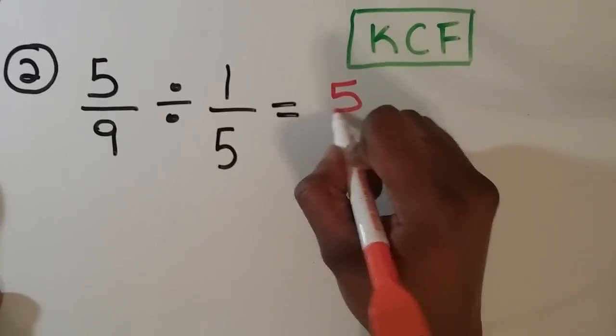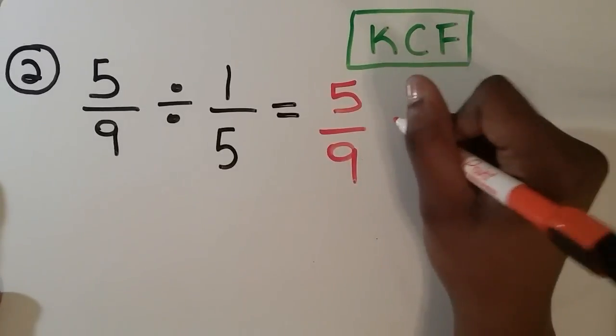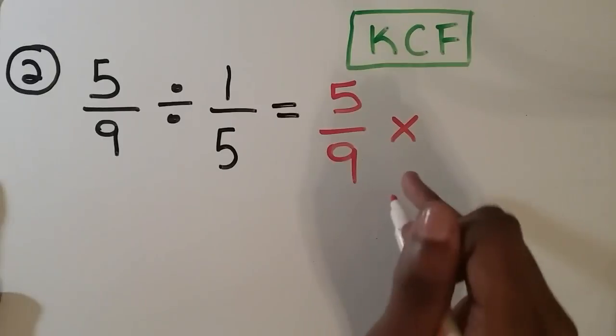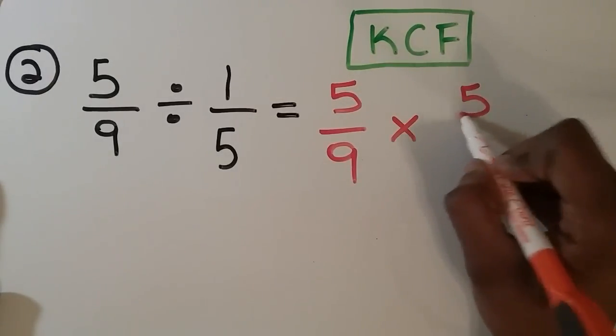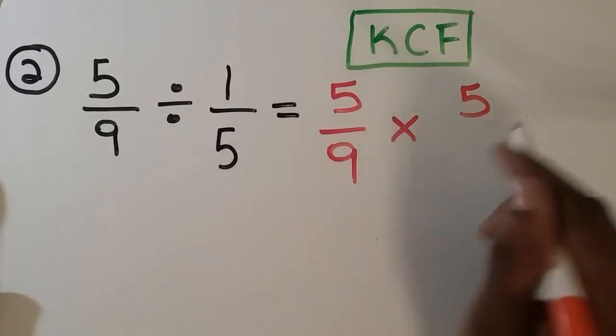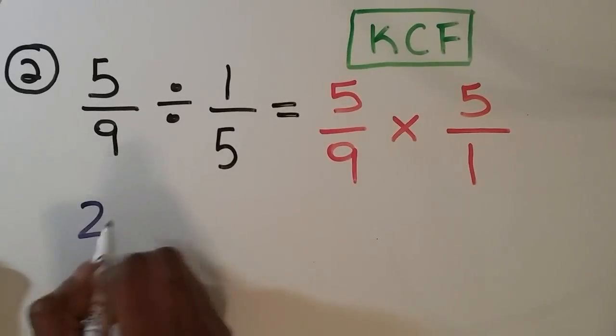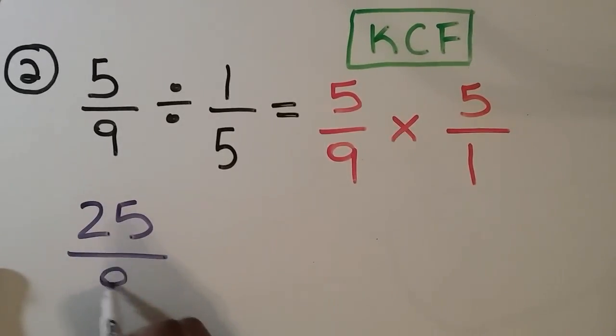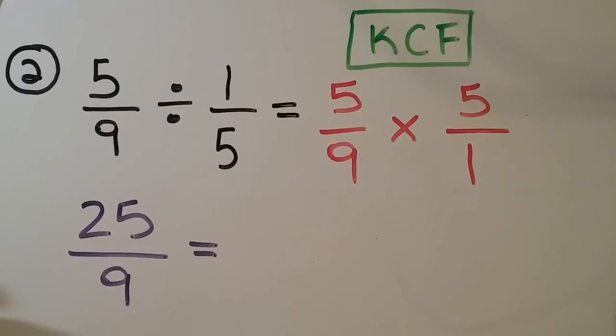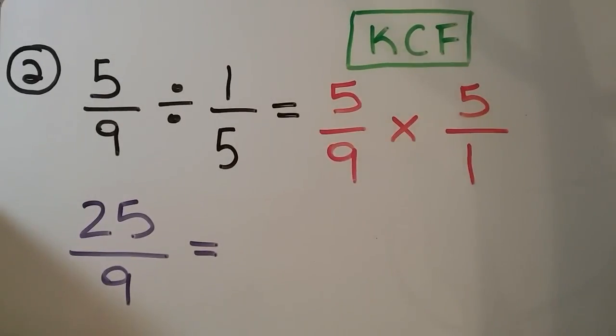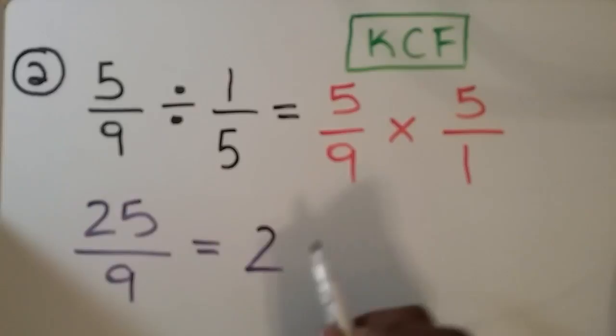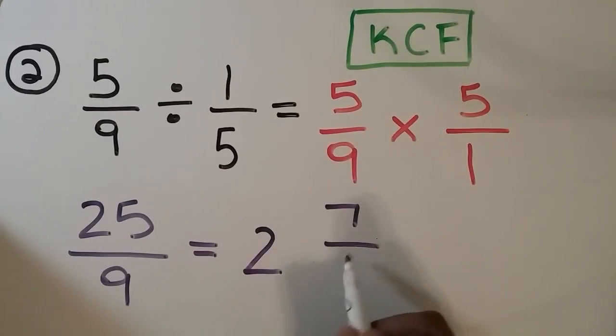We're going to keep 5 over 9, then change the division sign to a multiplication sign, and flip 1 over 5 to 5 over 1. And multiply. And we get an improper fraction. You can either leave it like that or you could simplify it. When you simplify it, you get 2 and 7 over 9.